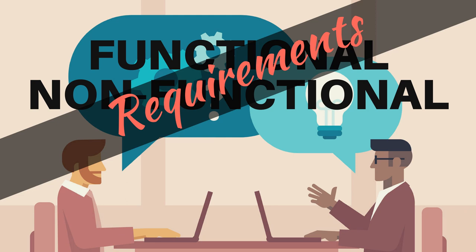The next process we are going to discuss in the scope management knowledge area is known as collect requirements. Before we go to collect requirements, it's important to understand what requirements are. The two most popular types that you should definitely know about are functional requirements and non-functional requirements. Some may argue there are other kinds, like product, stakeholder, or business requirements, but from a scope management perspective, these two are the most important.